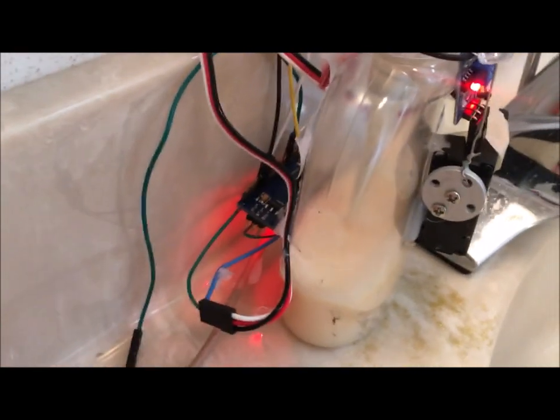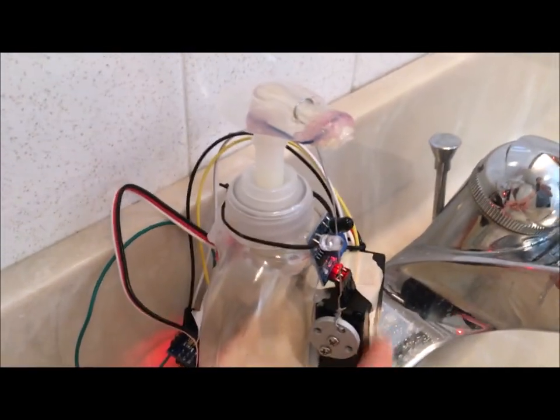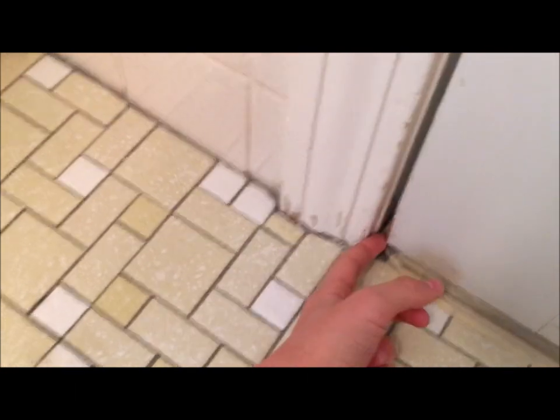So we start here. This goes directly to the 5 volt pin on the Arduino so it can run the servo easily and the Arduino. And if you follow this, it goes down the side of the cabinet, back behind this thing here. See it keeps going along the floor, out the door, it runs along the door here...